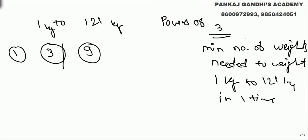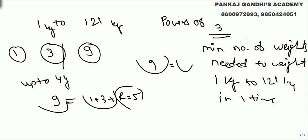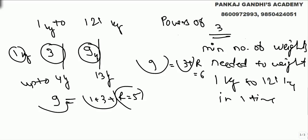Using 1 kg and 3 kg we can give anything up to 4 kg. To give 5 kg, put 9 on one side and 1 plus 3 on the other side — the rice will be 5 kg when they balance. So using 1, 3, and 9 we can give anything up to 13 kg. The rule is: using powers of 3 we can give anything up to their summation — check it, up to 13 we can give anything using these 3 weights.